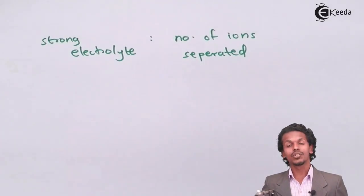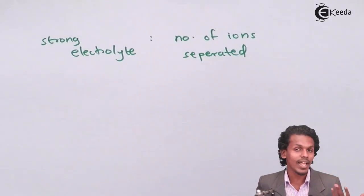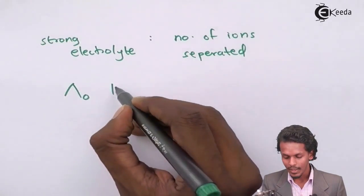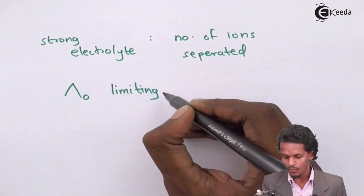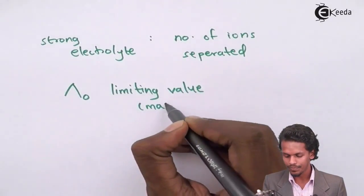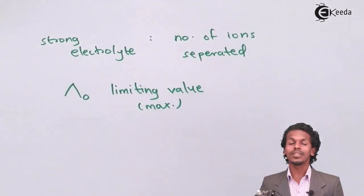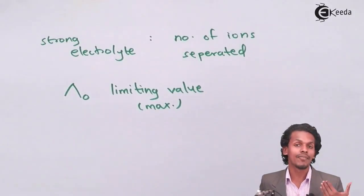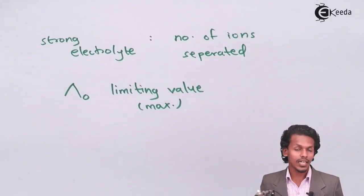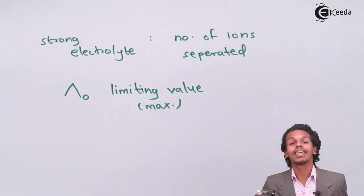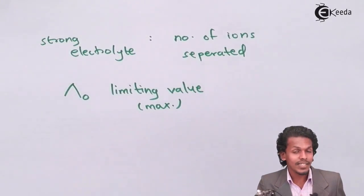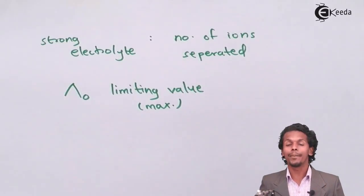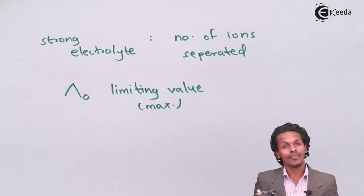This leads to a maximum value of molar conductance, represented by lambda naught, also known as the limiting value or maximum limiting value. This is the value approached when the molar conductivity is at infinite dilution — the molar conductivity of the strong electrolyte approaches this limiting value.